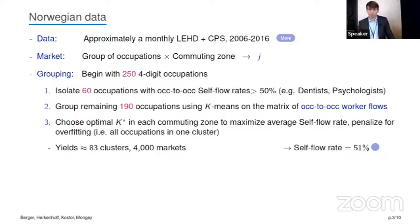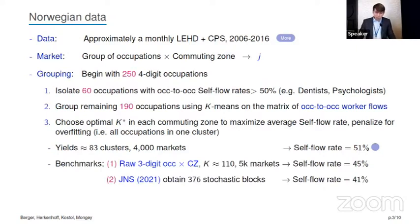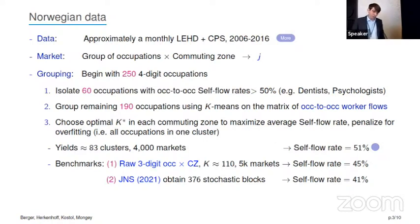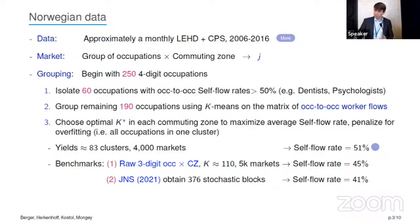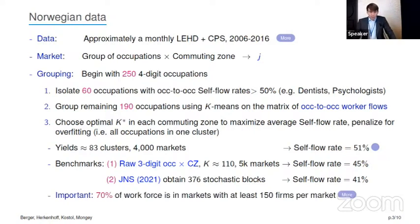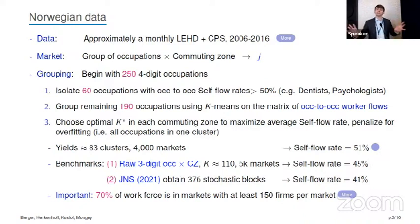Running our algorithm, we end up with about 83 clusters per commuting zone — about 4,000 markets in Norway with a self-flow rate of about 51%. As a benchmark, three-digit occupations yield about 110 clusters per market with about 5,000 markets and a lower self-flow rate of 45%. The Dix-Carneiro, Nimczek, and Sorkin stochastic block method, which groups firms based on worker flows, yields a self-flow rate of about 41%. Importantly, about 70% of the workforce in Norway is in markets with at least 150 firms, so markets look fairly competitive.